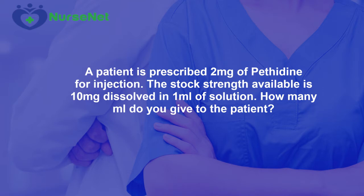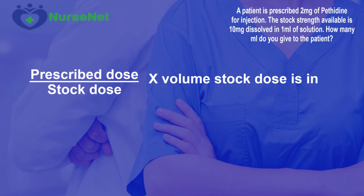To work this particular calculation out, we need to apply our basic stock dose formula: the prescribed dose divided by the stock dose, or the stock strength, multiplied by the volume that the stock strength is dissolved in.